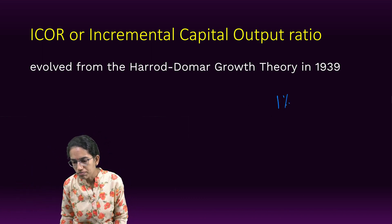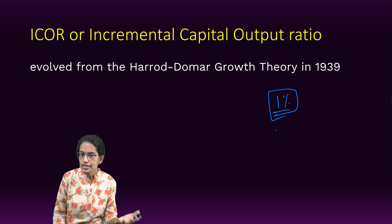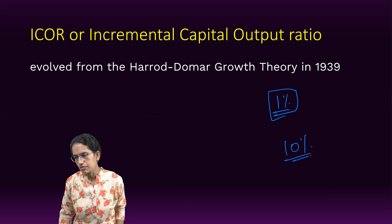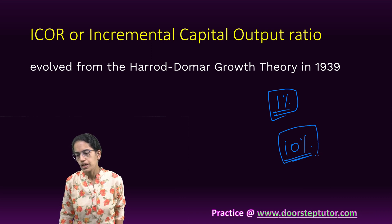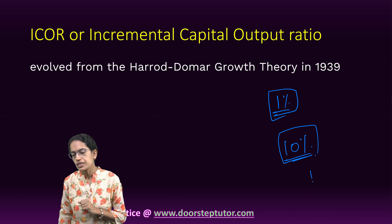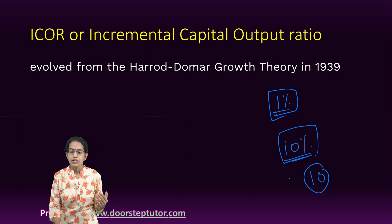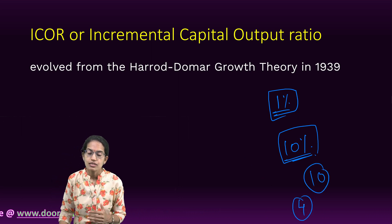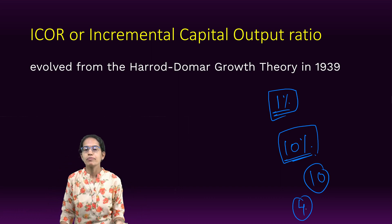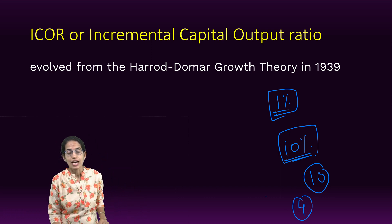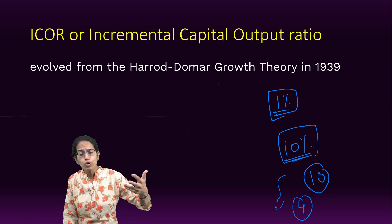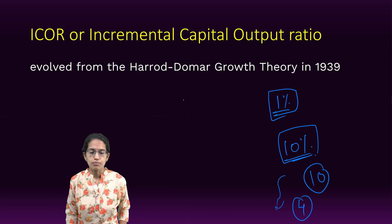When we say generating 1% higher output with the existing capital, let's say if I want to generate 10% of the capital to make the output more productive, that means my ICOR is 10. However, if this value is less, that's better — because with lesser capital, I am able to generate more output, as simple as that. So, the lower the value of ICOR, the more productive the economy is.